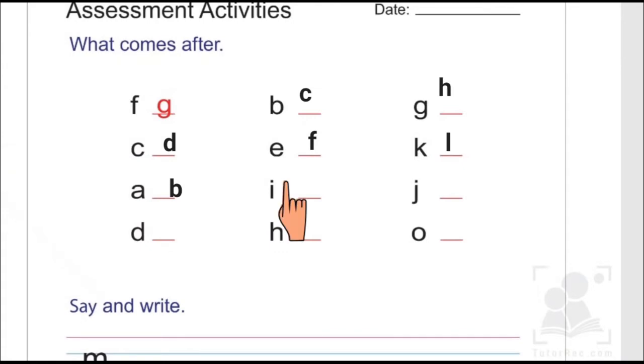Another letter we have is I: A, B, C, D, E, F, G, H, I, J. J comes after I, so here we have to write J.